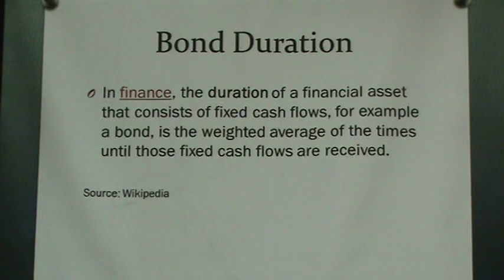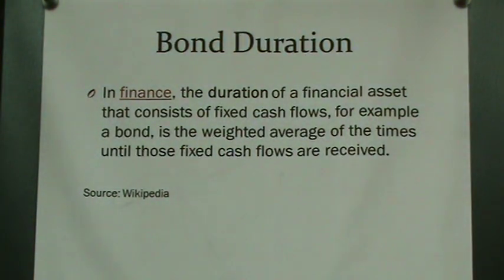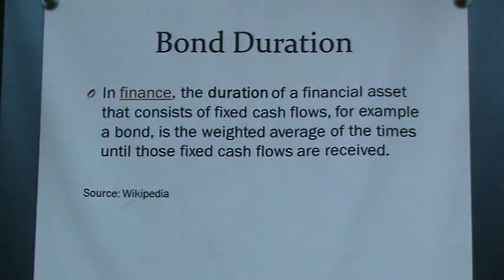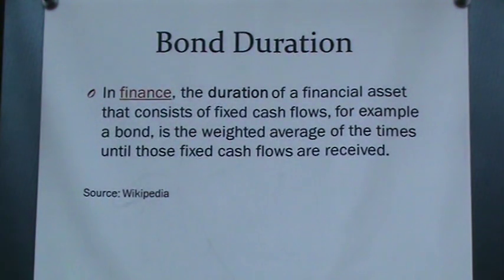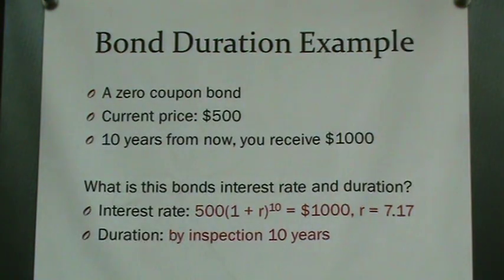One last topic while we're discussing bonds: the concept of a bond's duration. This won't come up much in this course but will in others. From Wikipedia: in finance, the duration of a financial asset that consists of fixed cash flows — for example, a bond — is a weighted average of the time until those cash flows are received. Let's go through an example to make this clearer.